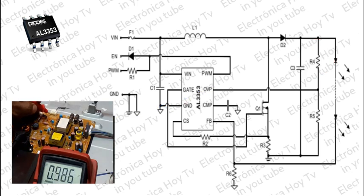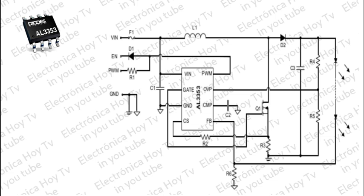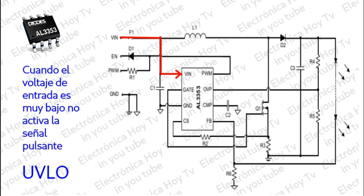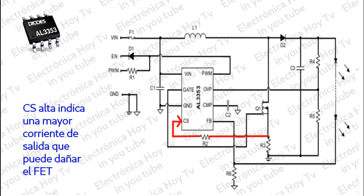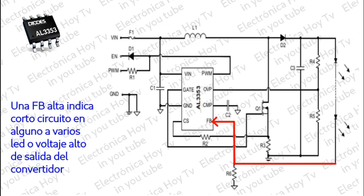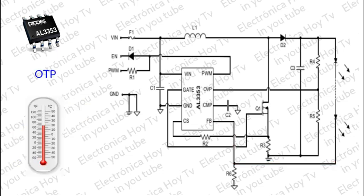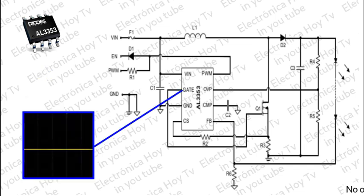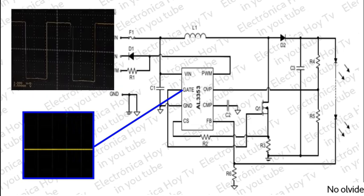El AL3353 también comprueba otras fallas, como OCP y OTP. Después de esto, el convertidor elevador aumenta la salida con el arranque suave interno, siempre que no haya condiciones de falla.